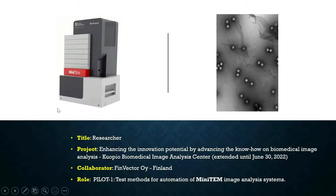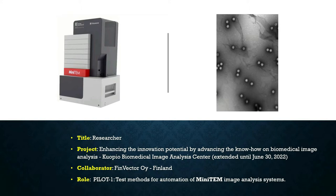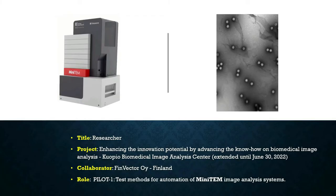Here we have a picture showing the Minitom system, and on the right side we have an image generated by this system. In this image you can see many objects with circular shapes where the inner area is whiter than the outer area — these are viruses. I work as a researcher on this project enhancing the innovation potential by advancing know-how on biomedical image analysis, a project that started in 2019 and was extended until the end of this month.